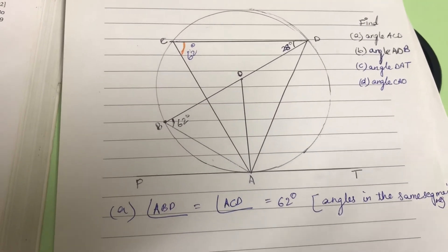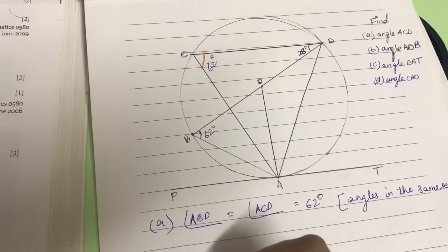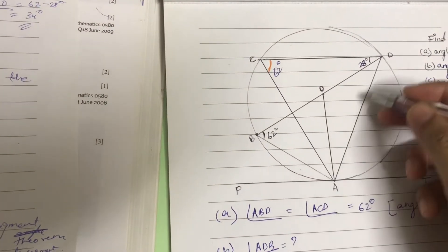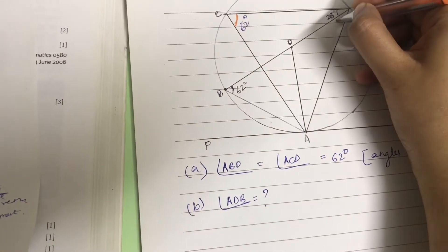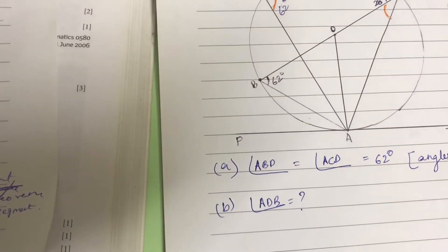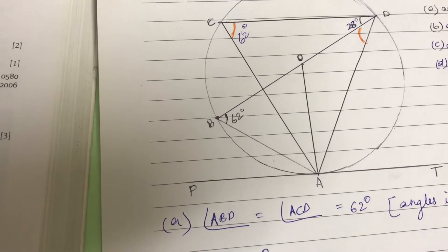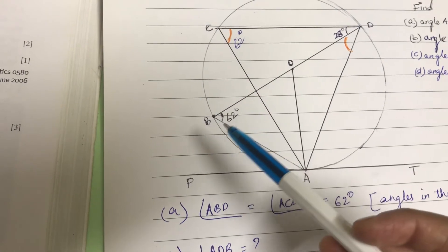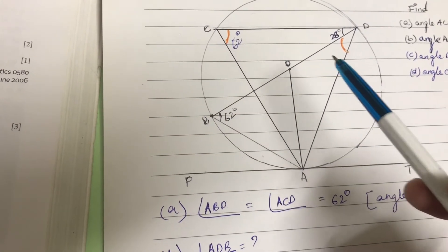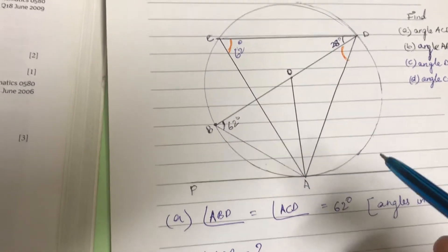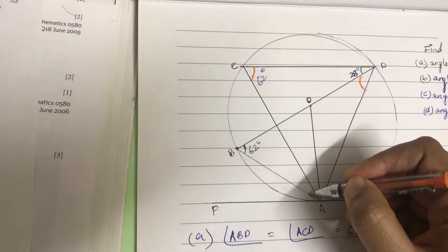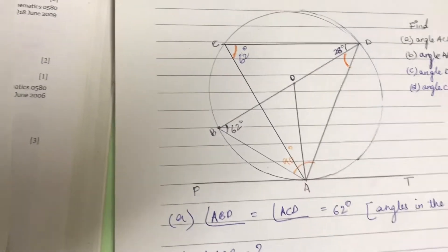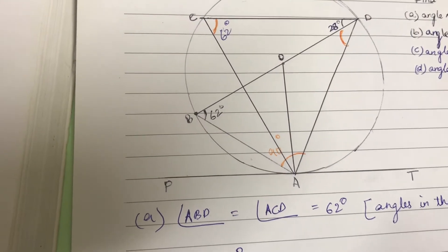Next, we need to find angle ADB. From the figure, O is the center and BD is the diameter. So triangle ABD is a triangle in a semicircle, which means angle BAD is 90 degrees — it is an angle in a semicircle.